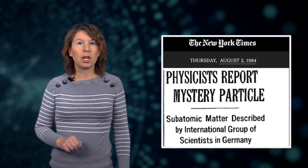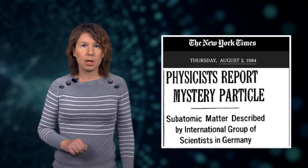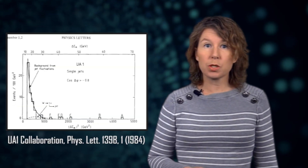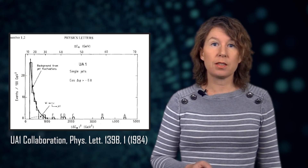The Higgs boson was discovered in 1984 — I'm serious. The crystal ball experiment at DESY in Germany saw a particle that fit the expectation already in 1984. It made it into the New York Times with the headline 'Physicists report mystery particle.' But the supposed mystery particle turned out to be a data fluctuation. The Higgs boson was actually only discovered in 2012 at the Large Hadron Collider at CERN. And 1984 was quite a year, because also supersymmetry was observed and then disappeared again.